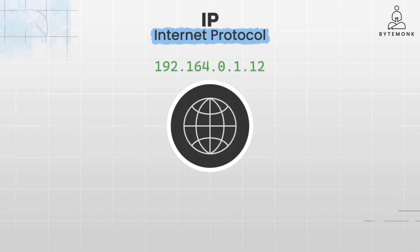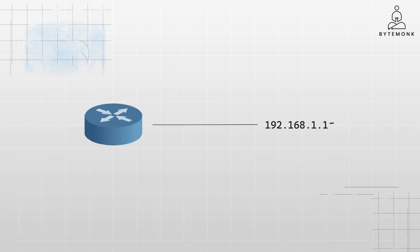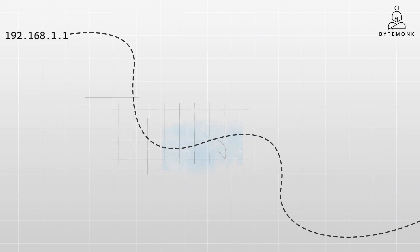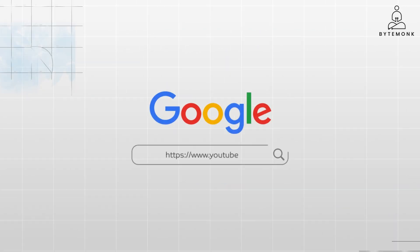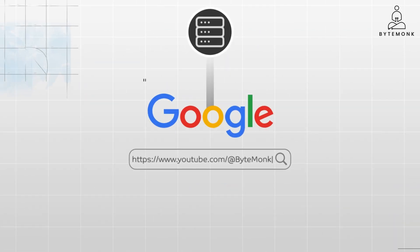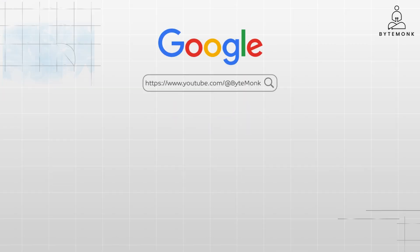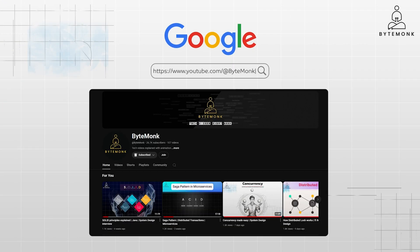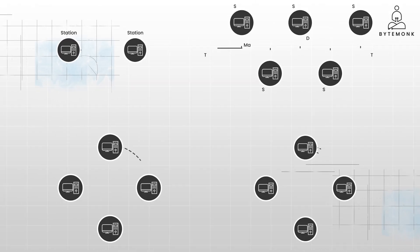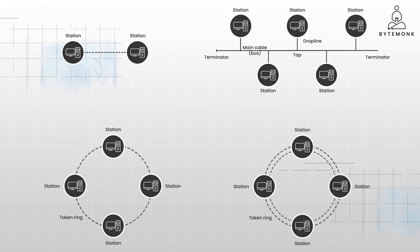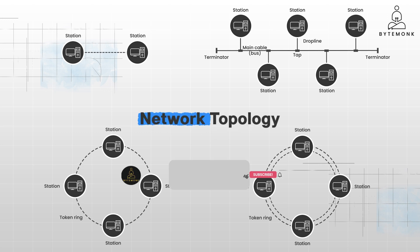In my last video, we dove into network protocols — rules that govern how devices communicate over the internet. Today, we are taking a step back to look at the bigger picture: the structure of networks themselves, also known as network topology.